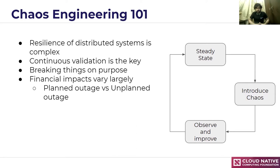What is chaos engineering? Chaos engineering is nothing but breaking things on purpose — or more precisely, breaking things on purpose to make them more secure. That means inducing an outage or a fault in a system deliberately, in a controlled way, to reduce and ultimately nullify the possibility of a future outage.